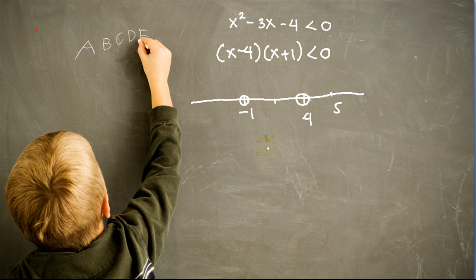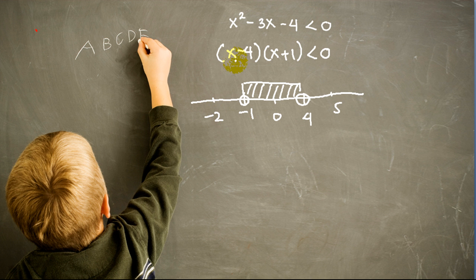Let's check a number between negative 1 and 4, say 0. Plugging in 0, we get negative 4 times 1 which is negative 4. Is negative 4 less than 0? Yes, it is a true statement, so all numbers between negative 1 and 4 are part of the solution. For a number less than negative 1, check negative 2. Plugging in gives negative 6 times negative 1 which is 6. Is 6 less than 0? No, because 6 is bigger than 0, so x less than negative 1 is not part of the solution.